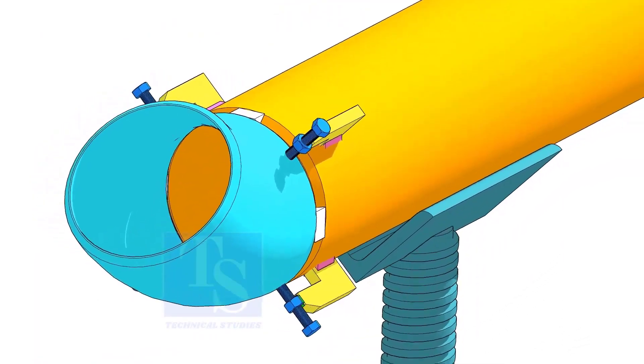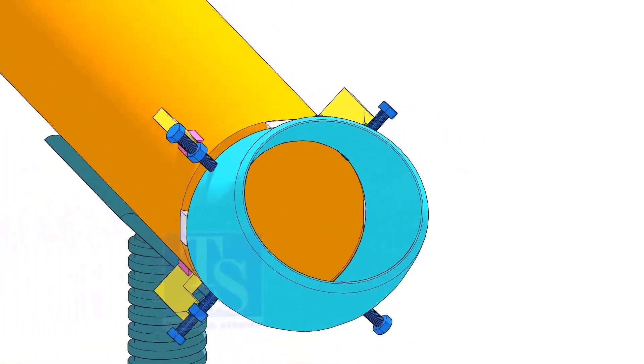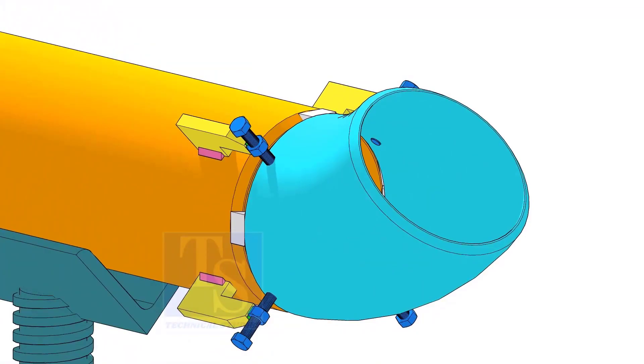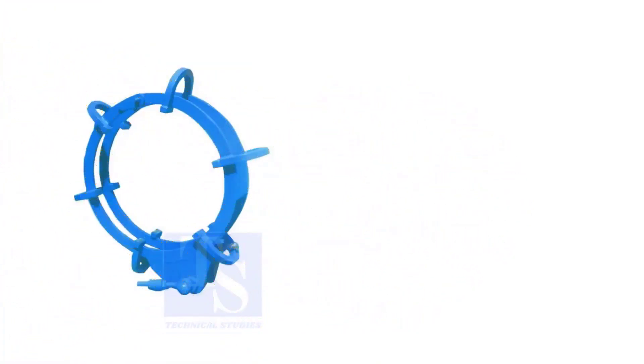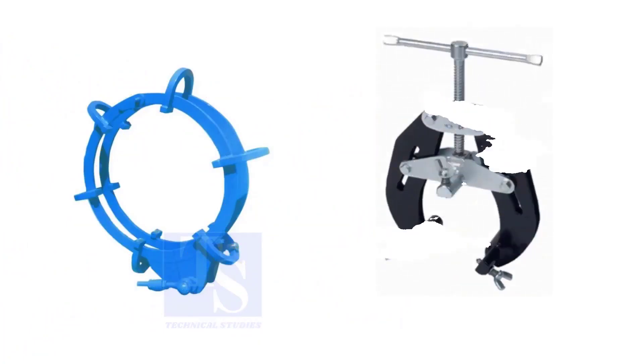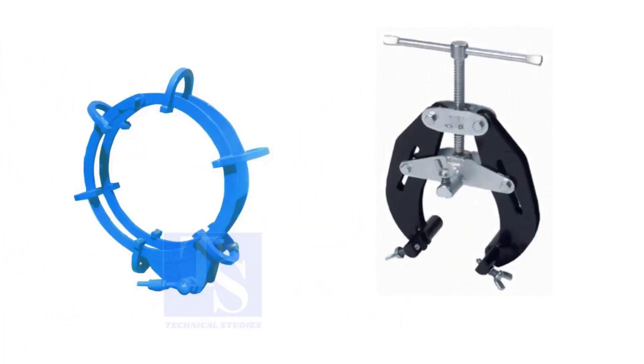Pipe aligning clamps are the most important tool for pipe fabrication, but are costly and need different sizes according to the size of the pipes. To overcome these disadvantages, we can use jack bolts. I will show you how to make a jack bolt.